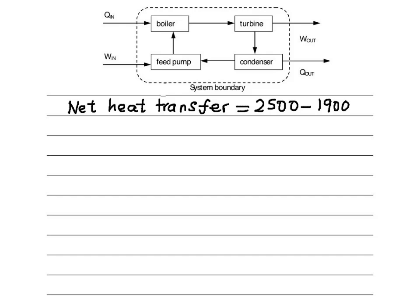This gives us 600 kilojoules per kilogram of steam produced. So far so good.